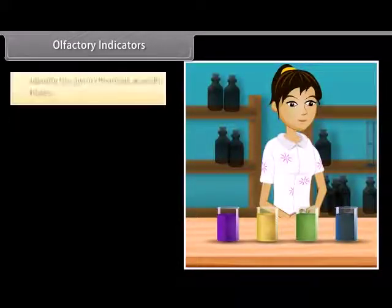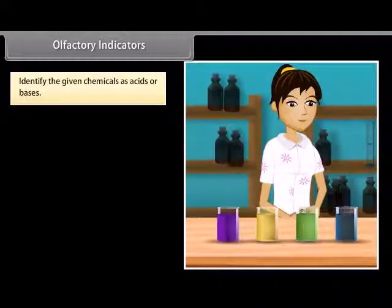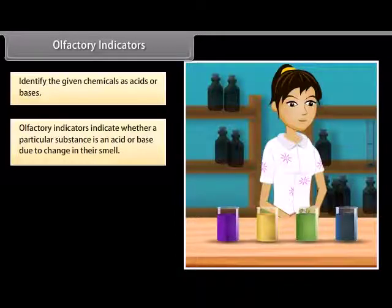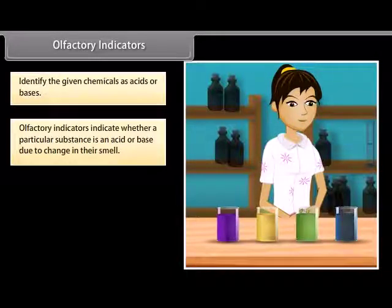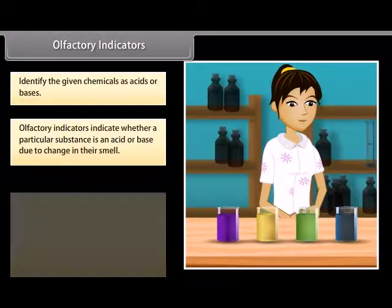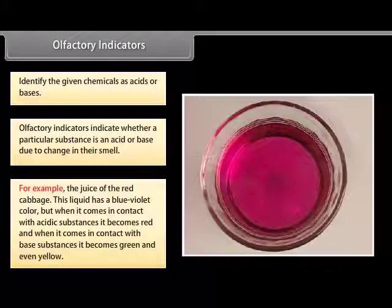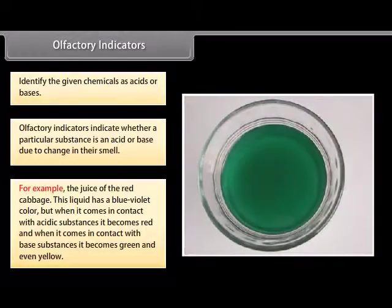Suppose you are given four chemicals and asked to identify them as acids or bases — how will you do it? We have olfactory indicators, which indicate whether a particular substance is an acid or base due to a change in their smell. They are used in the laboratory to test solutions by a process called olfactory titration. An olfactory indicator works on the principle that when an acid or base is added to a substance, its odor cannot be detected. For example, the juice of red cabbage has a blue-violet color, but when it comes in contact with acidic substances it becomes red, and when it comes in contact with basic substances it becomes green or even yellow.